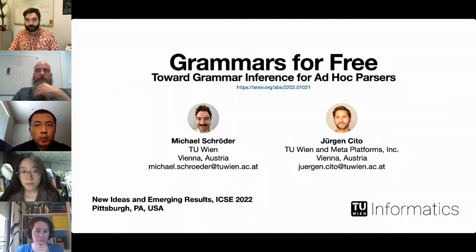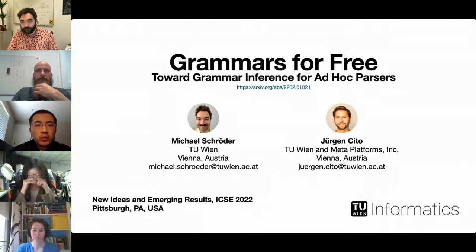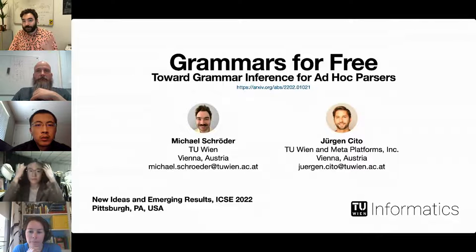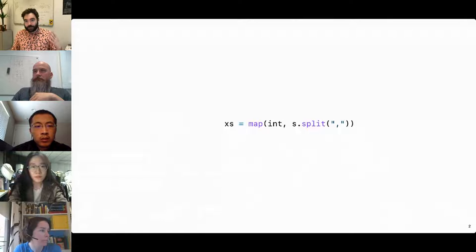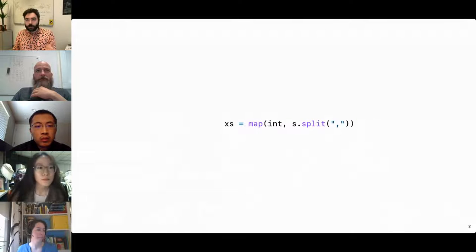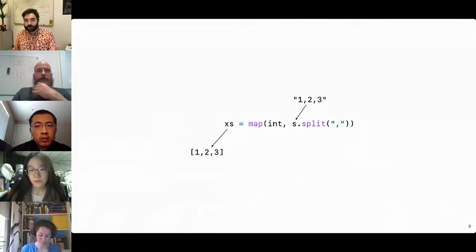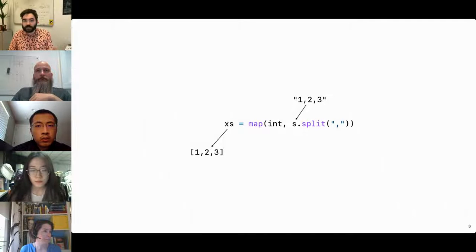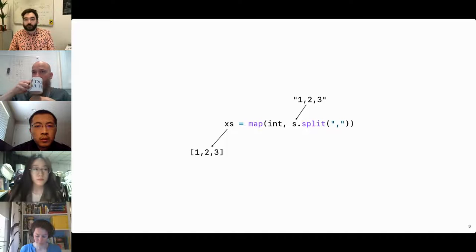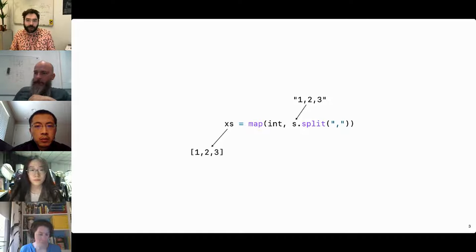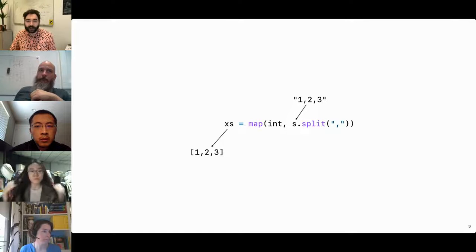Hi, everyone. My name is Michael Schroeder. I'm a PhD student at TU Wien in Vienna, Austria. This is 'Grammars for Free,' our vision toward grammar inference for ad hoc parsers. You probably have written code like this before — a simple Python expression that turns a string of comma-separated numbers into a list of integers using standard functions like split and map. This is what we call an ad hoc parser.